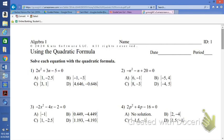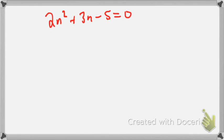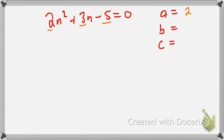For number 1, we have 2n squared plus 3n minus 5, and that equals 0. The first thing you want to do is write down your A, B, and C. Your A is the number in front of your variable — the coefficient that goes with your variable squared. This is your B, and this is your C. So our A is 2, our B is 3, and our C is negative 5.